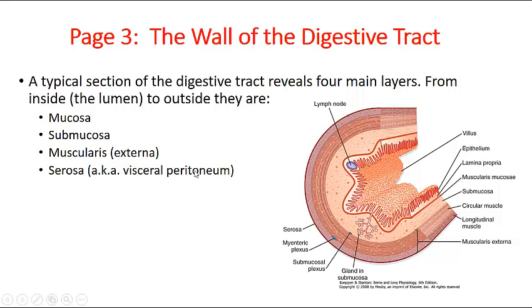Now let's look at the wall of the digestive tract. A normal section of the digestive tract reveals four main layers. Looking from the inside out, there is the mucosa, then submucosa, muscularis, and the outermost layer, serosa. The mucosa is the innermost layer in contact with the lumen portion.